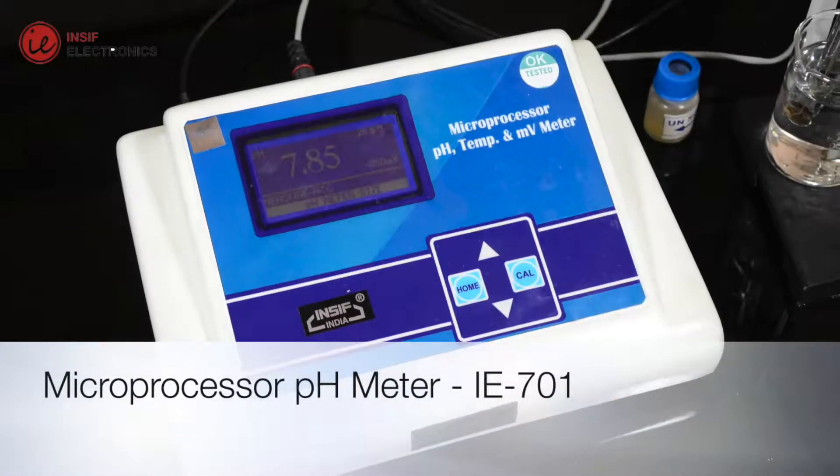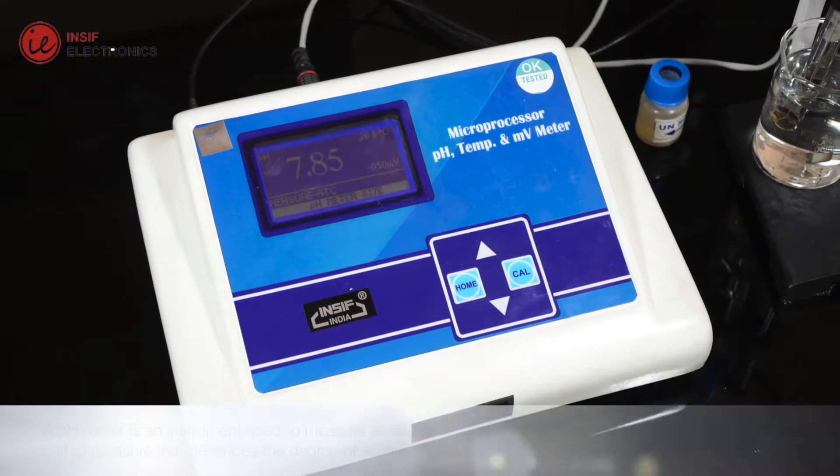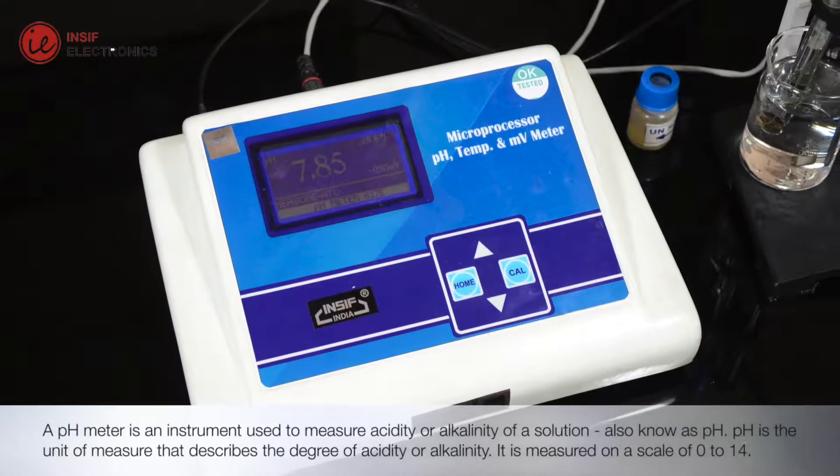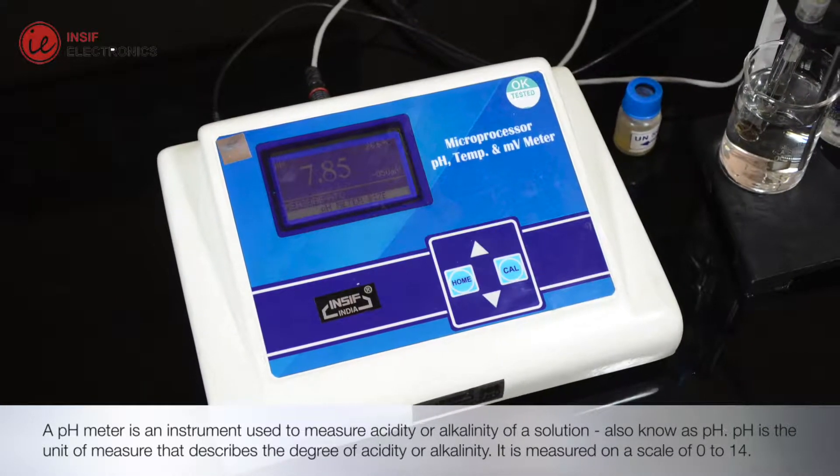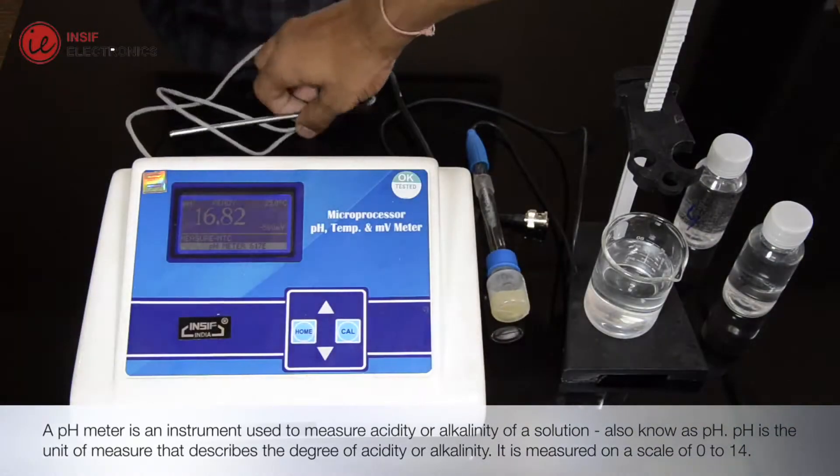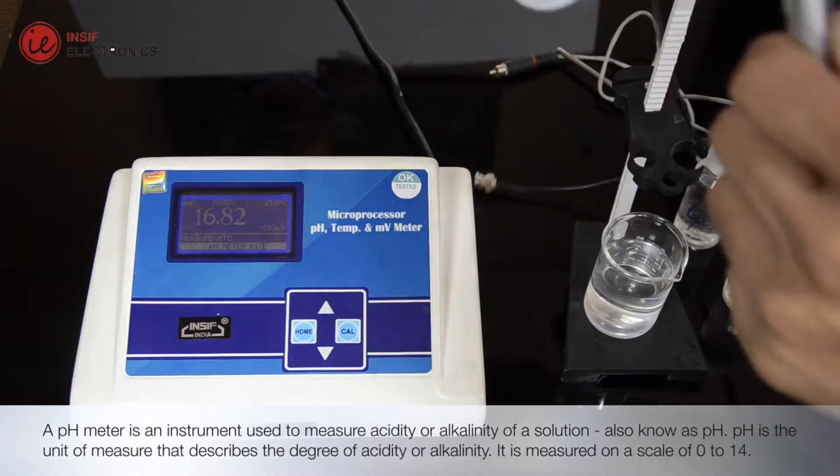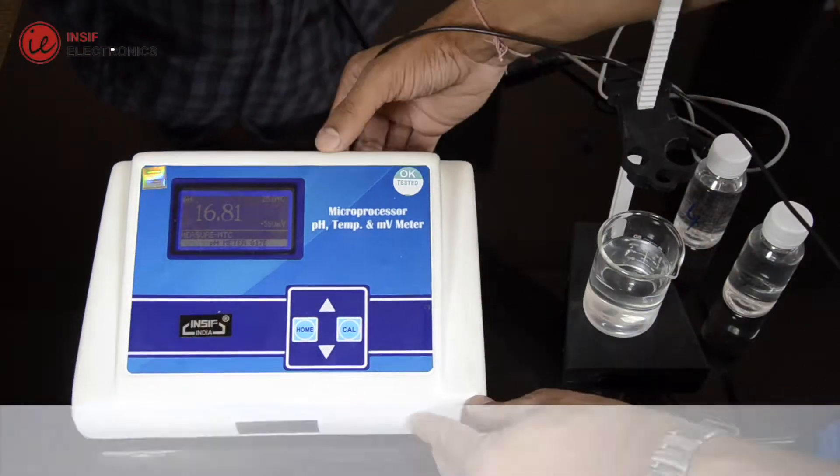A pH meter is an instrument used to measure acidity or alkalinity of a solution, also known as pH. pH is the unit of measure that describes the degree of acidity or alkalinity. It is measured on a scale of 0 to 14.